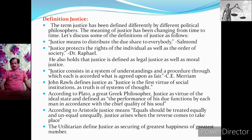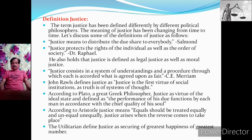According to Salmond, justice means to distribute due share to everybody. According to Dr. Raphael, justice protects the rights of individuals as well as the order of society. He also says that justice is defined as legal justice as well as moral justice. According to C.E. Merriam, an English political scientist, justice consists in a system of understandings and procedures through which each is accorded what is agreed upon as fair.